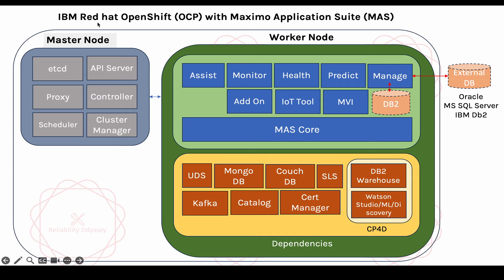When we talk about Red Hat OpenShift, the concept is that it has something known as a master node as well as a worker node. You can have one machine with both master node and worker node installed, or you may have an installation with multiple machines where few machines are for the master node and few other machines are for the worker node. The purpose of the master node is to manage the state of the whole cluster.